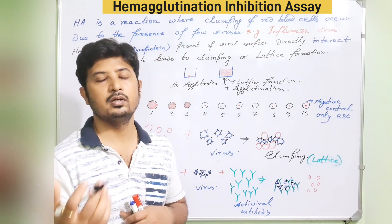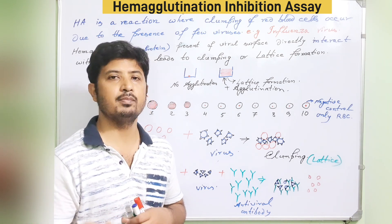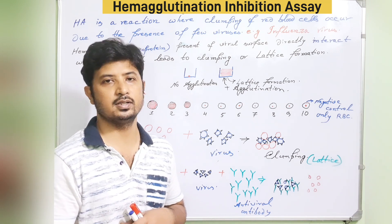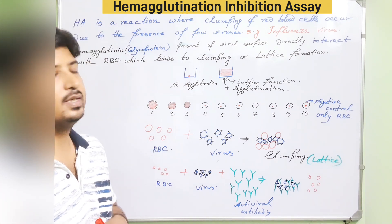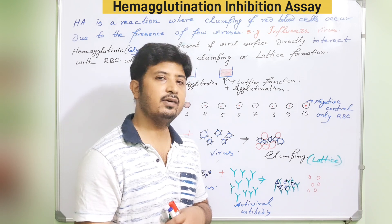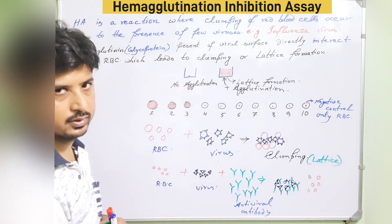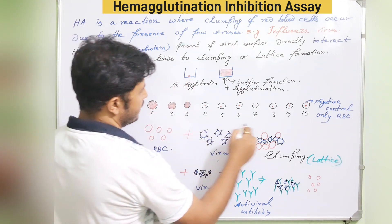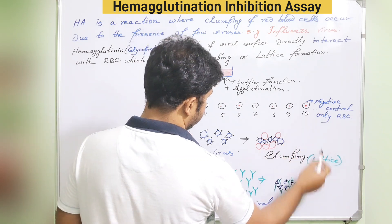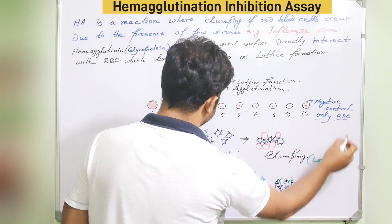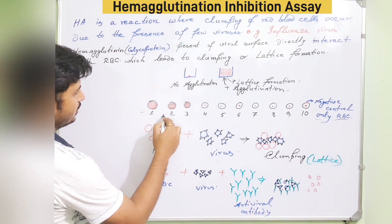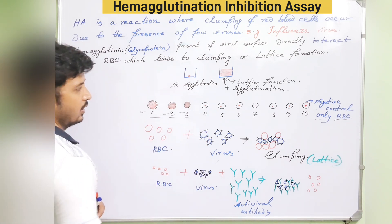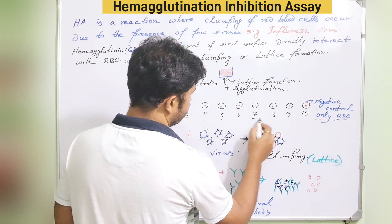Not all viruses possess the hemagglutinin antigen, so only those viruses that contain it can be identified through this process. I've drawn a simple structure of wells for side-by-side comparison. You always need to include a positive and a negative control. The negative control contains only RBC cells, and wells one through three show agglutination or lattice formation.